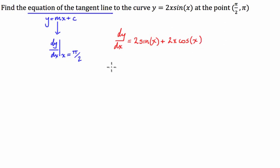Now what we're going to do is we're going to evaluate this derivative, so we've got dy over dx, we're going to evaluate it at x is equal to pi over 2. And that's going to be equal to 2 sine of pi over 2 plus 2 times pi over 2 cosine of pi over 2.